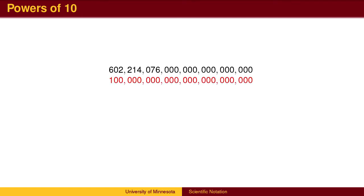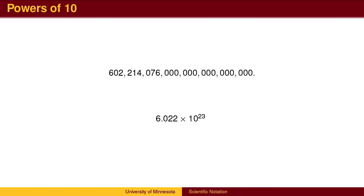If we take 10 to the 23rd power, we get a 1 followed by 23 zeros. Avogadro's number is a 6 followed by 23 other digits, and therefore is slightly larger than 10 to the 23rd. If we move the decimal point 23 places to the left so that it leaves only a single digit to the left of the decimal point, we arrive at scientific notation. The original number is expressed as a number between 1 and 10 multiplied by 10 to some power.